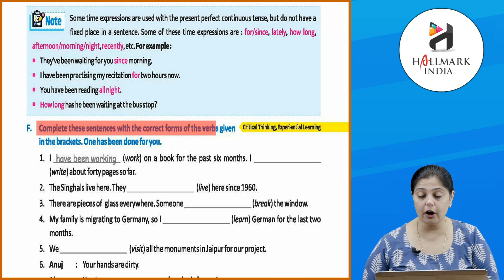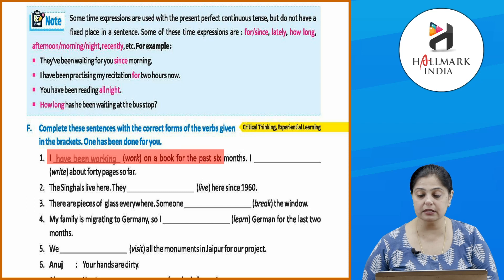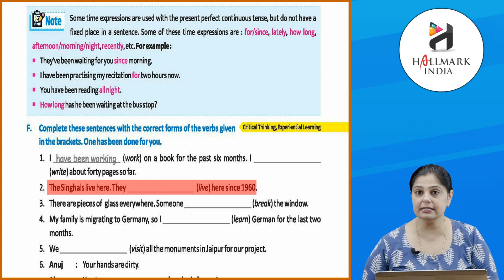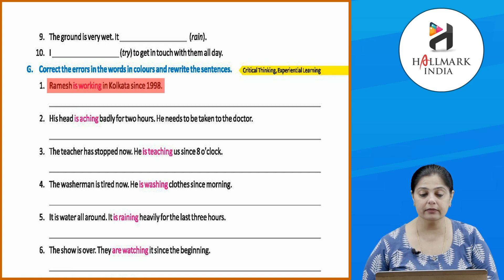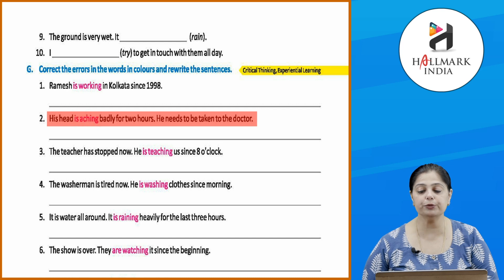Exercise: complete sentences with correct present perfect continuous forms. 'I have been working on a book for the past six months — I have written about 40 pages so far.' 'The Singles have been living here since 1960.' For error correction: 'Ramesh is working in Kolkata since 1998' should be 'Ramesh has been working in Kolkata since 1998.' 'His head is aching badly for two hours' becomes 'His head has been aching badly for two hours — he needs to be taken to the doctor.'